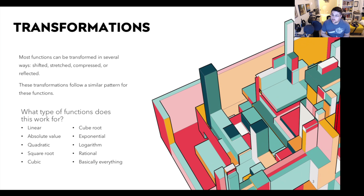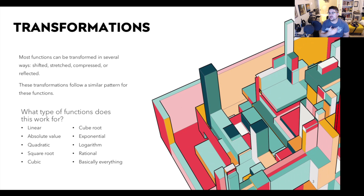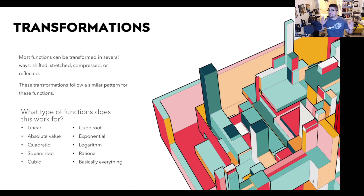We have different types of transformations — not changing suspension or engines, but we're talking about shifted, stretched, compressed, or reflected. These transformations follow a similar pattern for all function types: linear, absolute value, quadratic, square root, cubic, cube root, exponential, logarithm, rational — basically everything. You can even use this with functions we're not covering in this class, or combinations of functions.